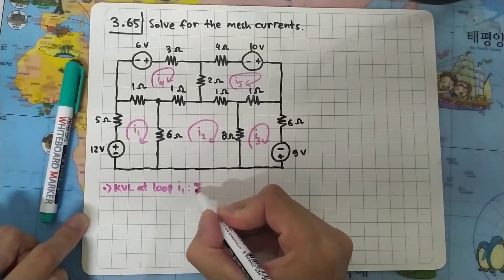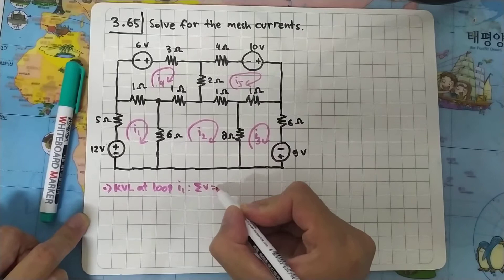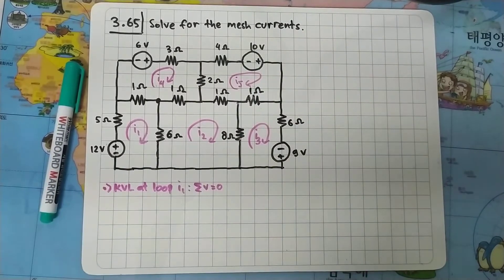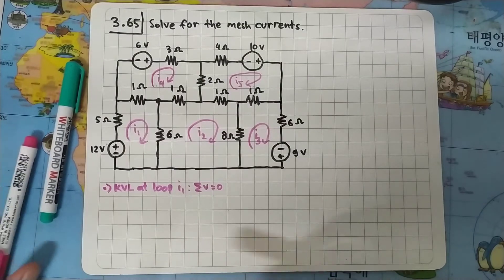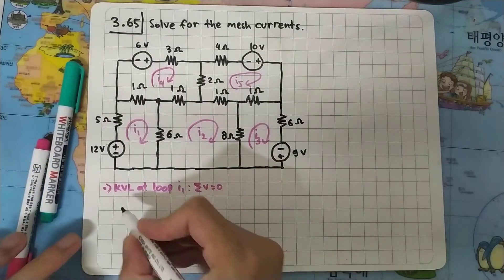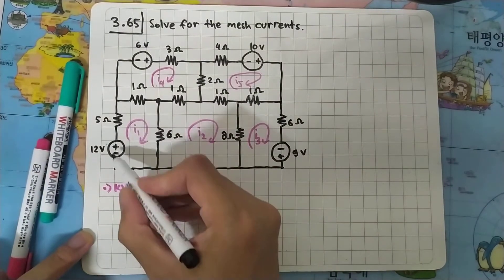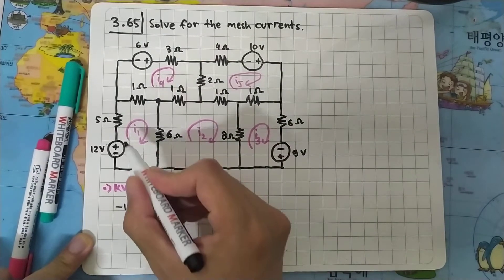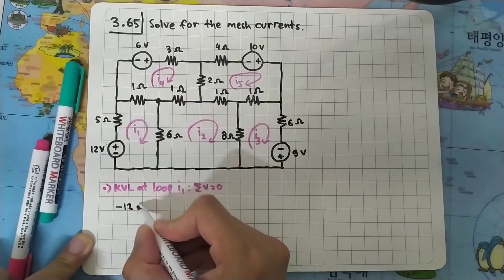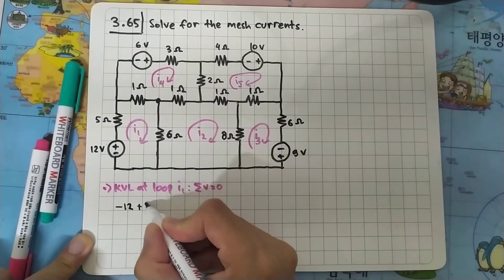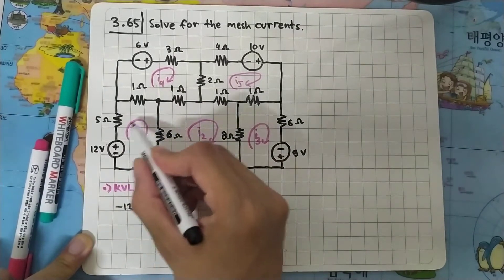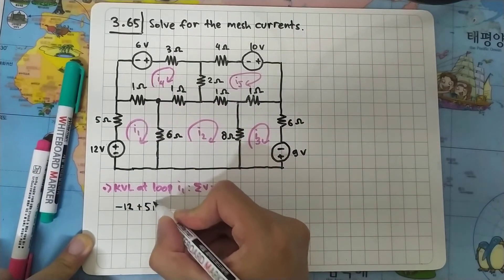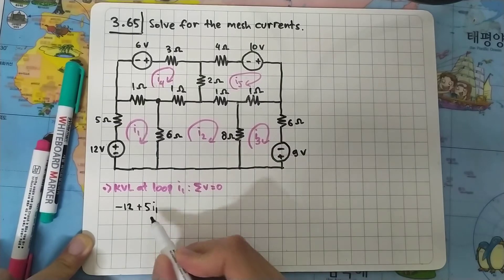KVL says that the sum of voltages in a loop equals zero. Starting from the voltage source, the value is 12 volts, but here the current is flowing from negative to positive, so the sign will be negative. We move on to the 5 ohm resistor, and the focus of our loop is I1, so we multiply by I1.